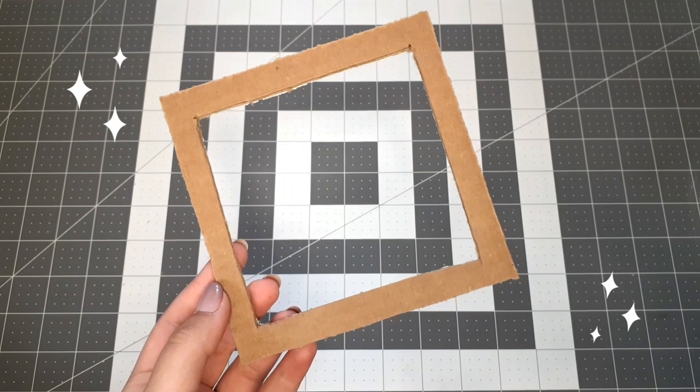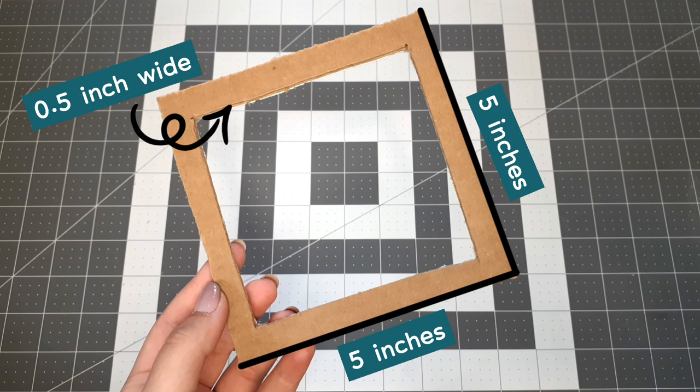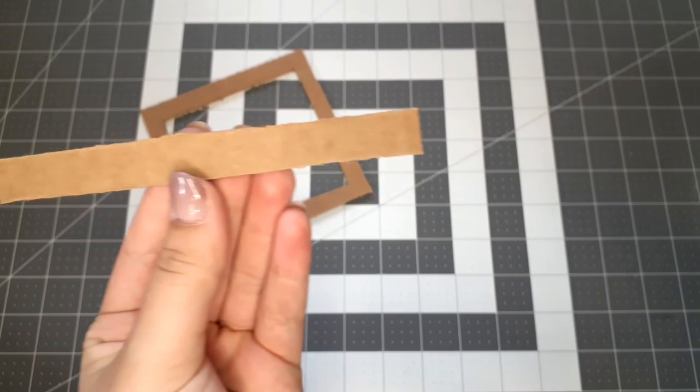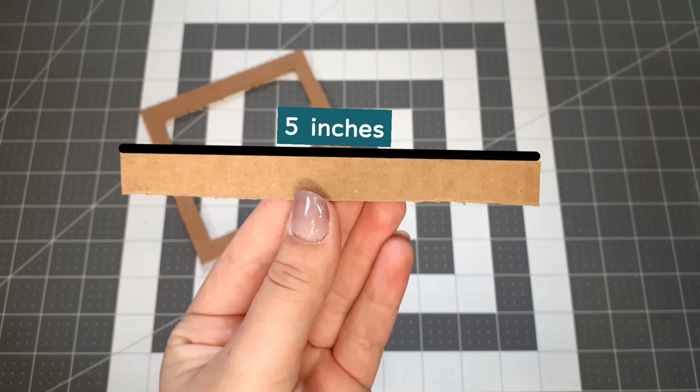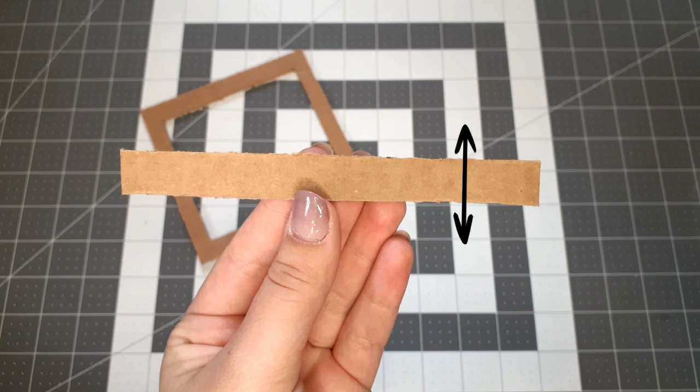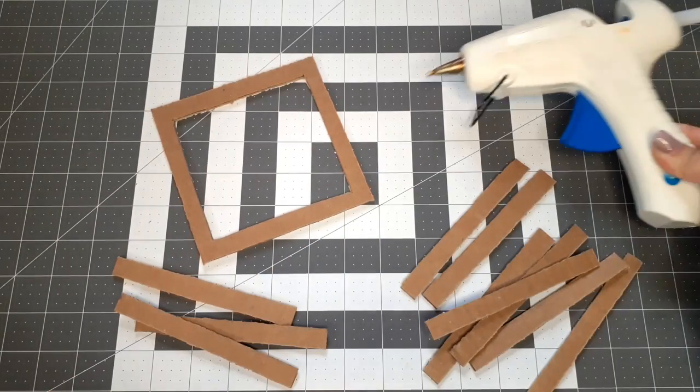The next DIY is a woven foraging mat. You'll need a square of cardboard with the dimensions that I'll put on the screen, and ten strips of cardboard that are five inches long and a half inch wide. Also, make sure that the lines in the corrugated cardboard are going vertical, because the strips need to be flexible. You'll also need a hot glue gun.